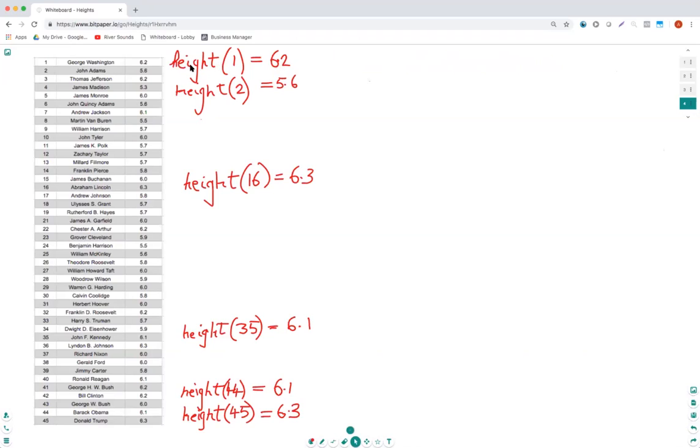What would that mean? It means the height of the first president was 6.2, he was 6.2 feet tall. The height of the 16th president, here height of 16 is 6.3, and that's right here, that's Abe Lincoln, 6.3.